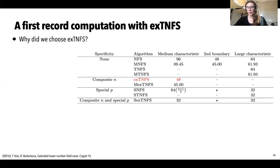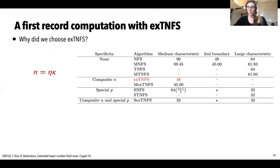Why did we choose XTNFS? The X in XTNFS comes from the fact that N is composite, so we consider finite fields where the extension degree can be written as eta times kappa. The asymptotic complexities of NFS variants in medium and large characteristics are all expressed with L-notation where alpha equals one-third, but what changes is the constant C. In medium characteristics, C equals 48 for XTNFS, whereas for classical NFS, C is the much larger value 96. So XTNFS is very promising for medium characteristic finite fields.